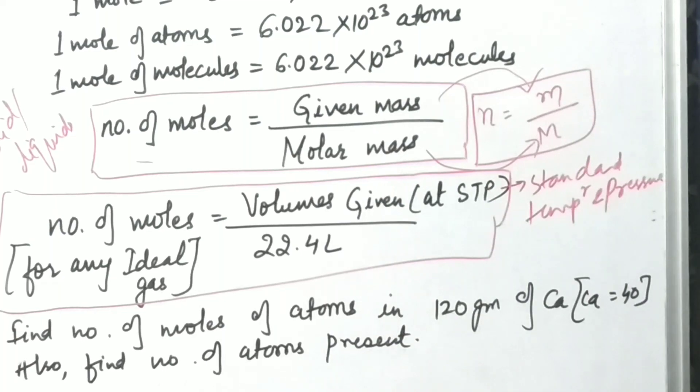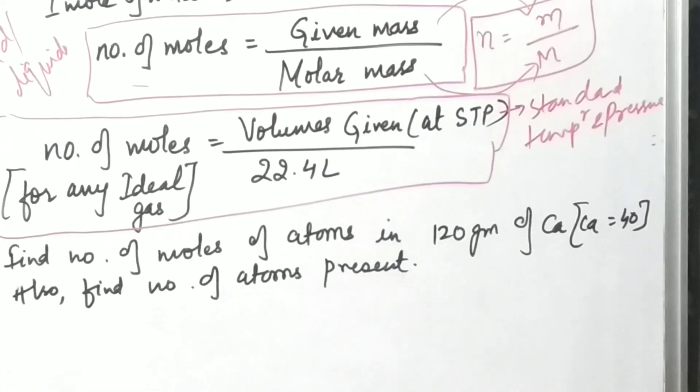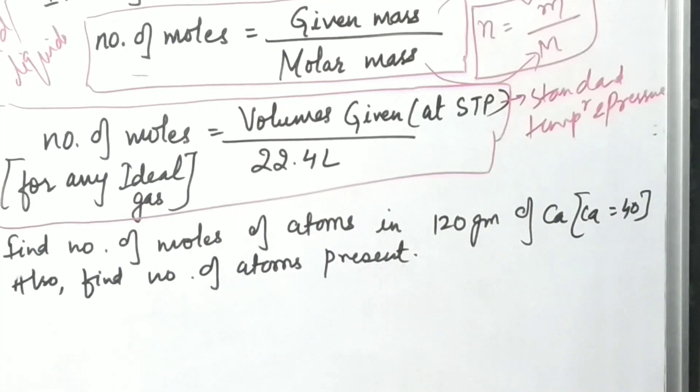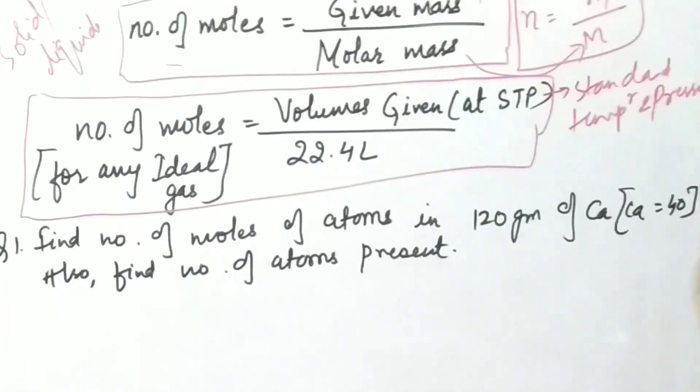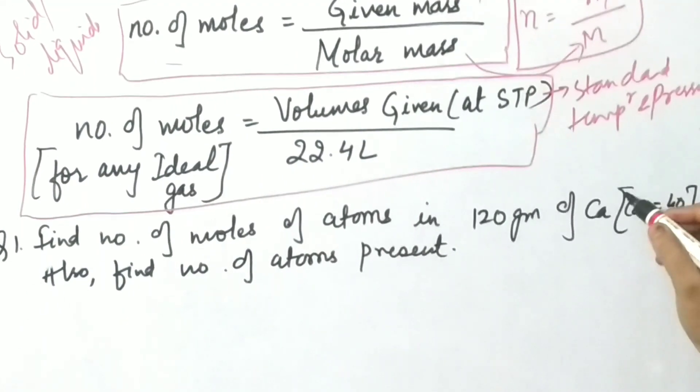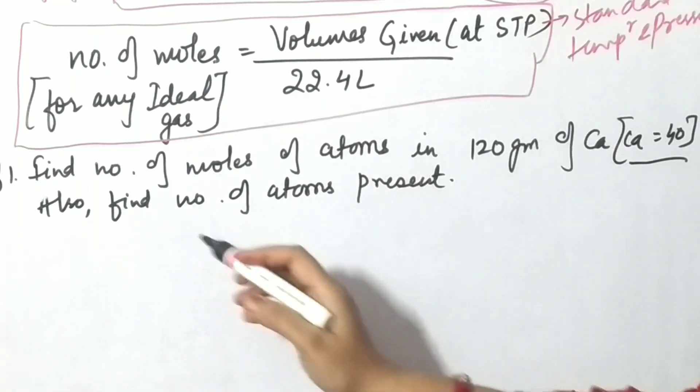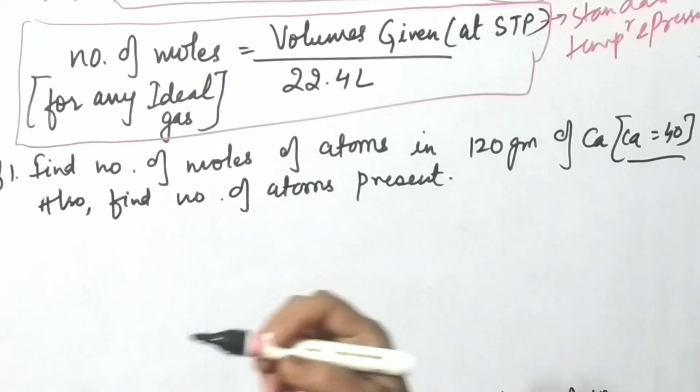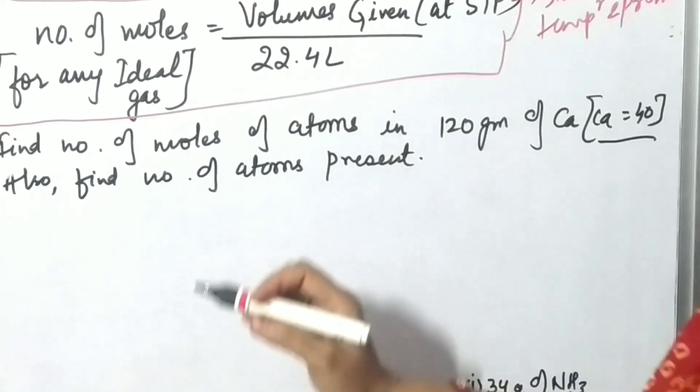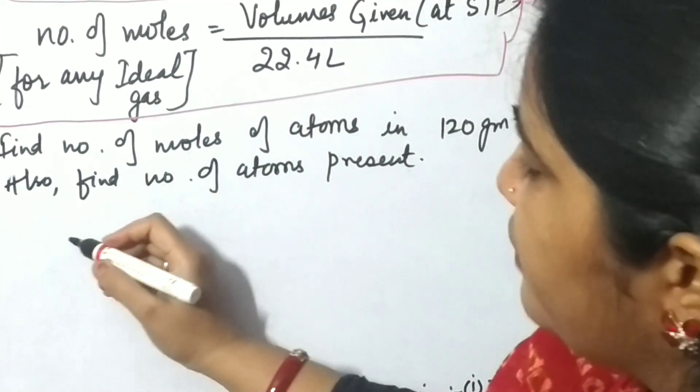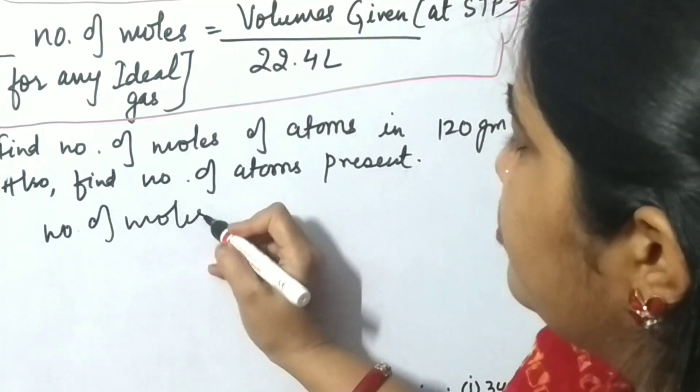Question number one: Find the number of moles of atoms in 120 gram of calcium. See, we know that the atomic mass of calcium is 40, so we have to find out the number of atoms also. We will do this stepwise. First of all, we will find out number of moles.